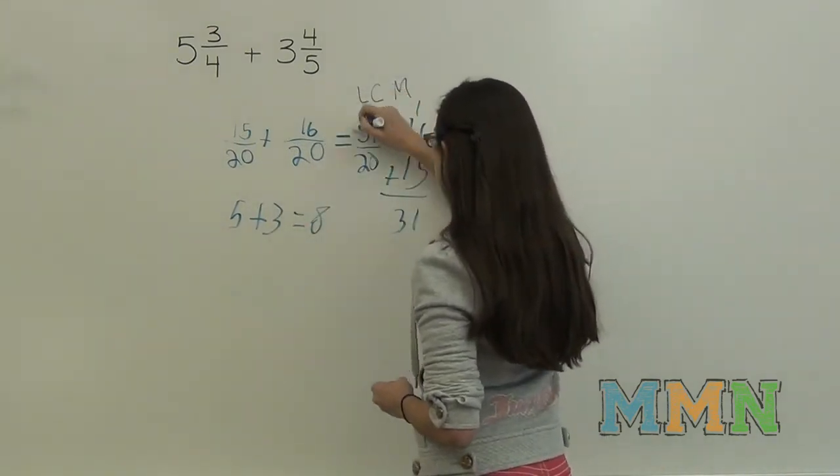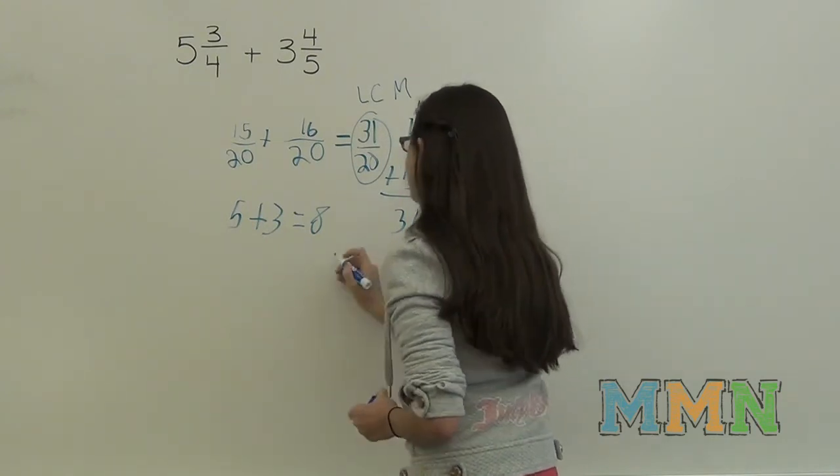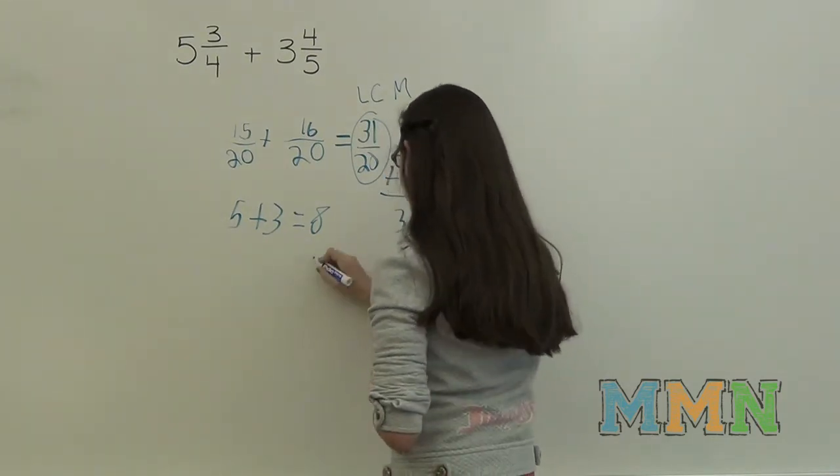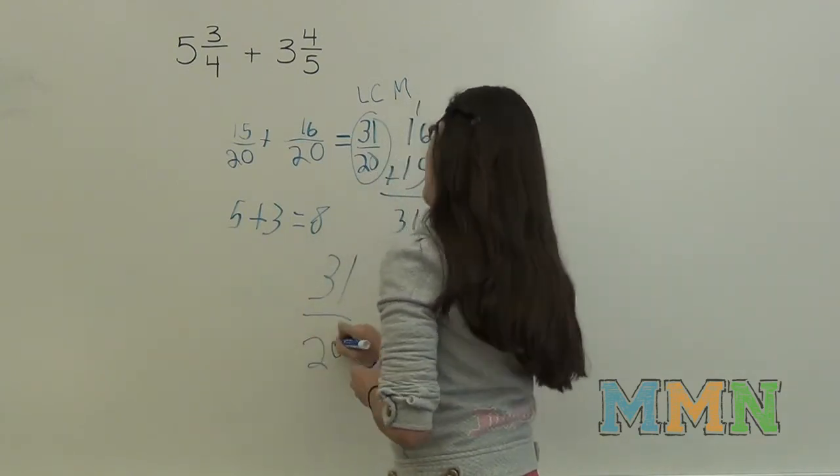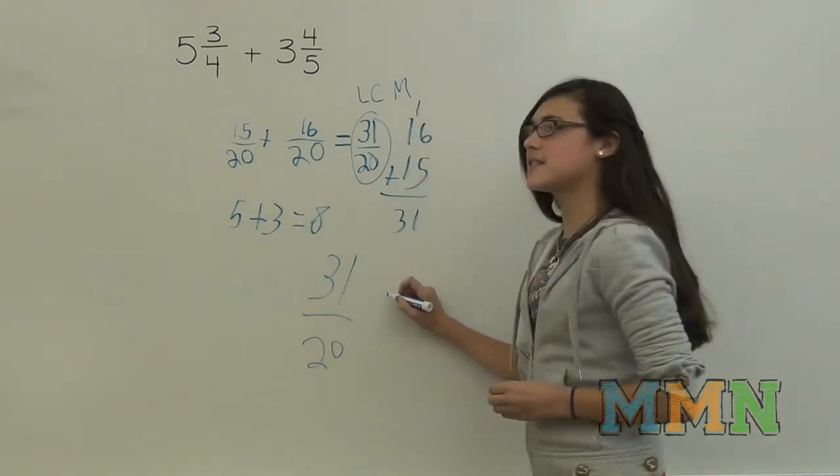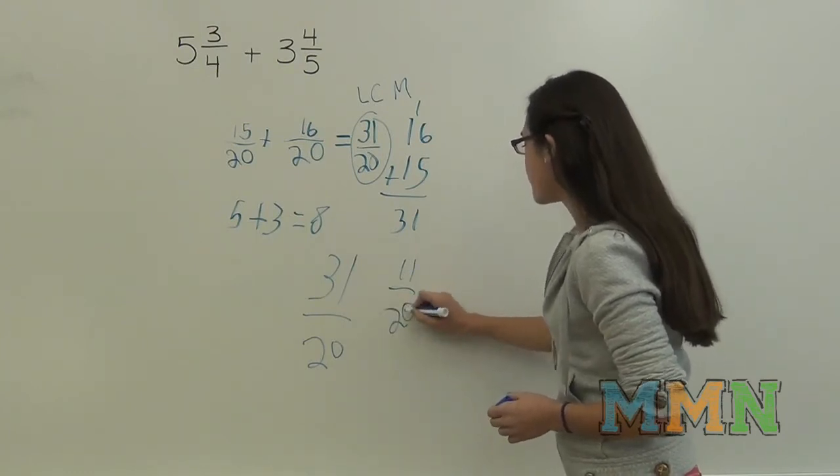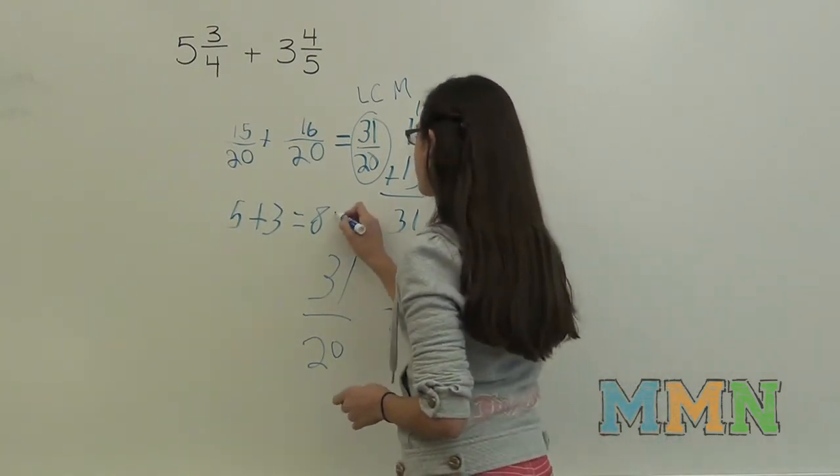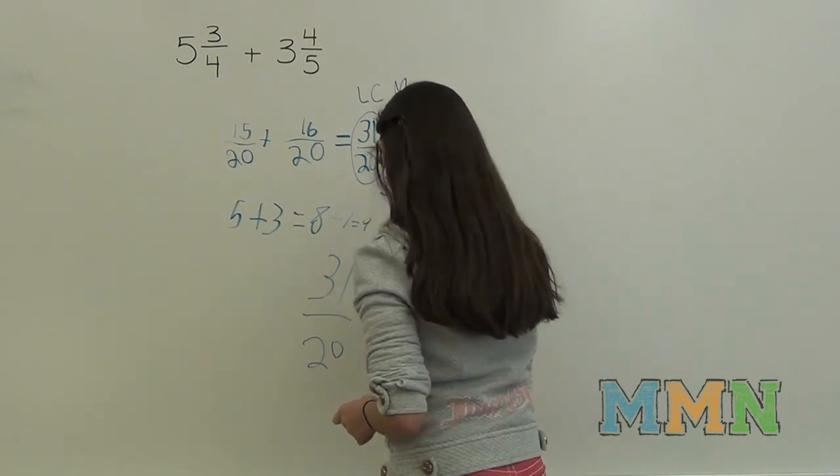But 20 could go into 31 once. So you'll have 11 left over, which is 11 twentieths. So 1 plus 8 equals 9. So it would be 9 and 11 twentieths. And that's how you add mixed numbers.